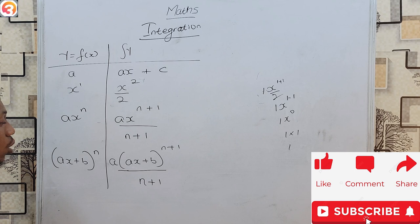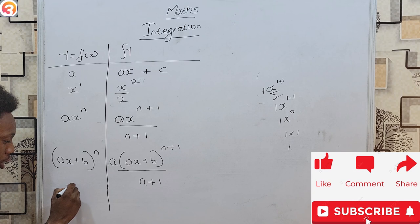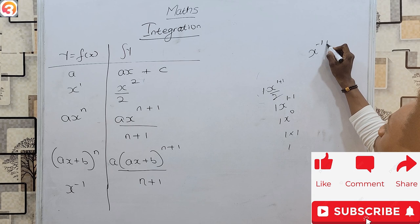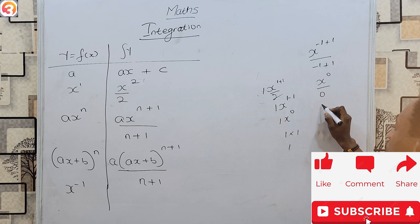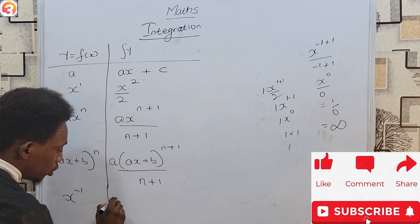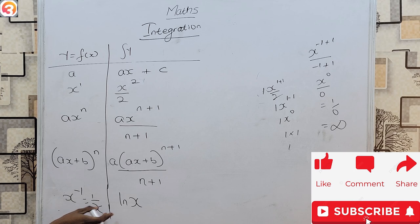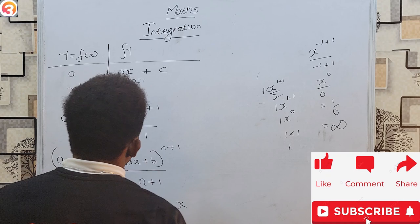One more very important special integral: in the case of x to the power of −1. If I tried to add 1 to it, I'd get x to the power of 0 over 0, which is 1 over 0 — undefined. Instead, you should know that integrating x^(−1) gives you the natural logarithm of x, ln x. This is because differentiating ln x gives 1/x, which is the same as x^(−1). So when you integrate 1/x, you get ln x or log base e of x.